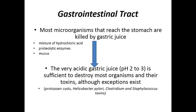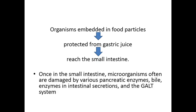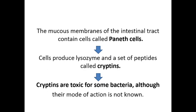Once food is consumed, it goes to the stomach, which is highly acidic with a pH of 2 to 3. In this environment, microorganisms cannot survive. However, few species like Helicobacter and Staphylococcus toxins can survive, especially when microorganisms are embedded in food particles and can evade the acidic conditions to enter the intestine. In the intestine, mucosal cells called Paneth cells produce antimicrobial compounds called cryptins, which are highly toxic to certain fungi and bacteria.